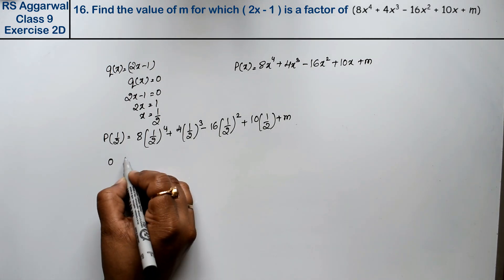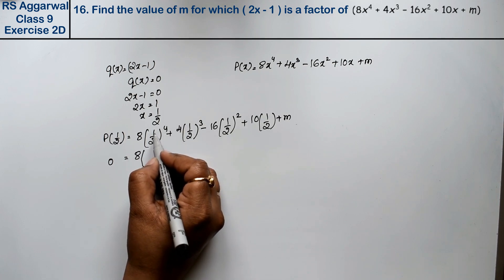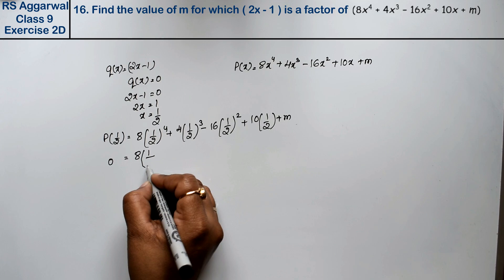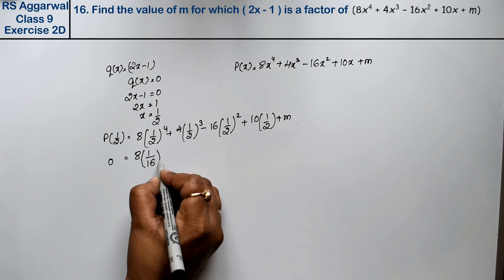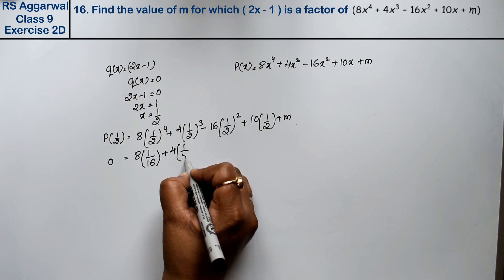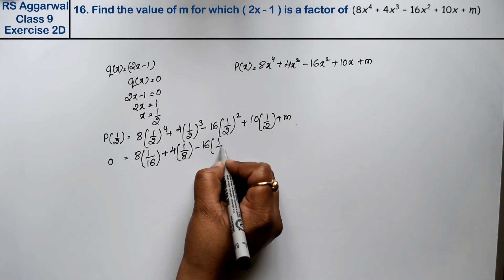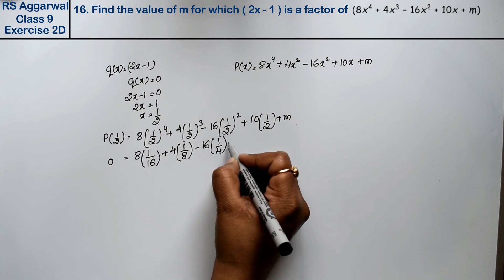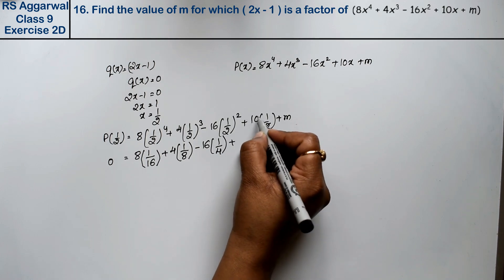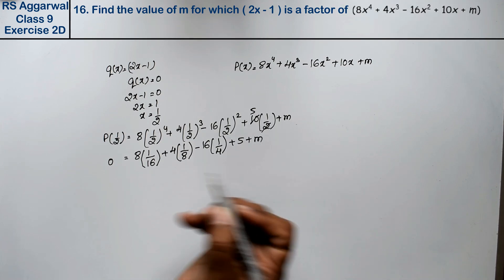Now, 1 upon 2 to the power 4 is 1 upon 16, so 8 upon 16. Plus 4 into 1 upon 8, minus 16 into 1 upon 4, plus 10 upon 2, plus M.